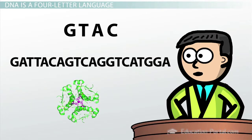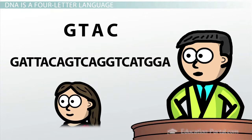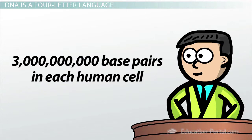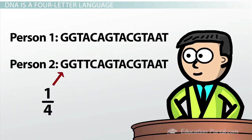Likewise, the order of DNA base pairs determines what biological molecules can be produced, and in turn, the characteristics that make each of us unique individuals. There are approximately three billion base pairs in each human cell. With the exception of twins, the chance that a sequence of DNA for any one person is exactly the same as another person is pretty much impossible simply due to the variation present from person to person. Consider that there's a one in four chance that someone has the same base pair at a given point in a piece of DNA as another person. There's another one in four chance at the next base pair, and so on. If you examine enough pieces of DNA, it becomes statistically impossible to mistake one person's DNA for another person's.